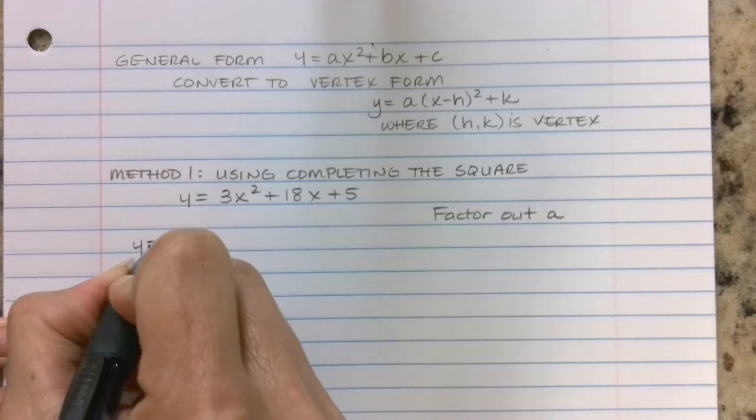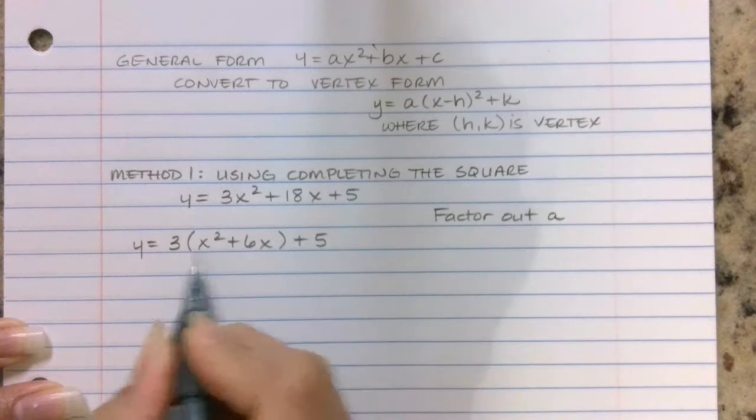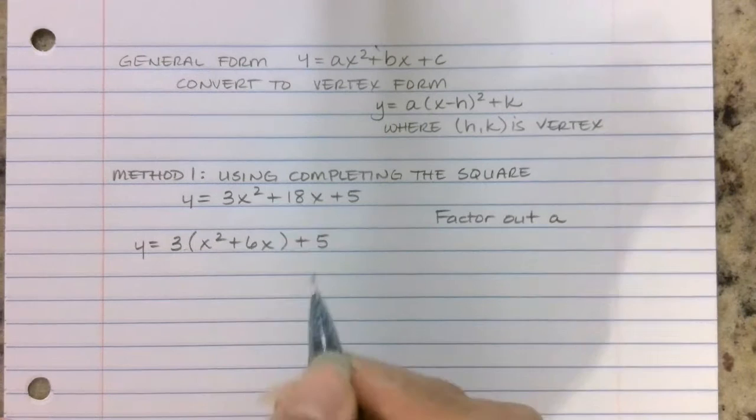So I'm going to write y equals, pulling out the 3, what's left over: x squared, what's left over: 6x, and I bring down my constant. So I undistributed. 3 times x² is 3x², 3 times 6x is 18x.